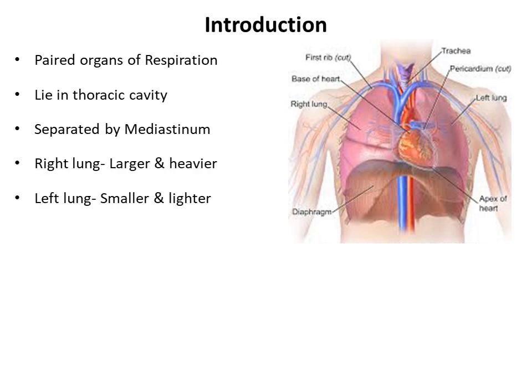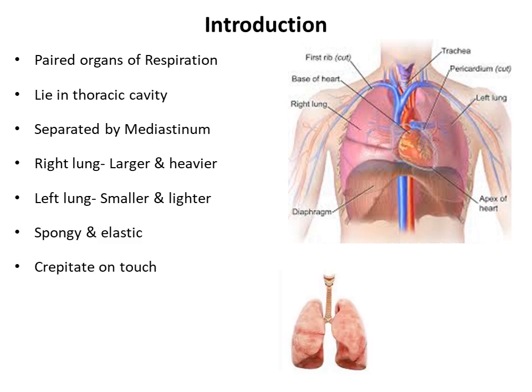The right lung is larger and heavier, whereas the left lung is smaller and lighter. This is due to the presence of the heart on the left side, which excavates into the left lung making it smaller. The texture of the lungs is spongy and elastic, which provides recoil for respiration. On touching, crepitations can be felt due to the air present inside the lungs.